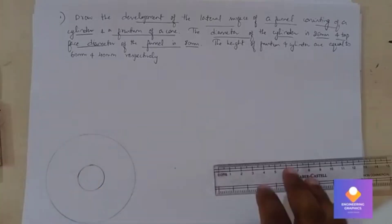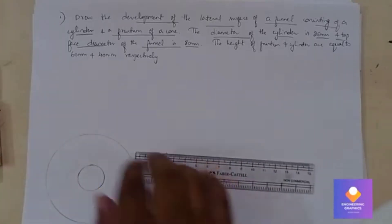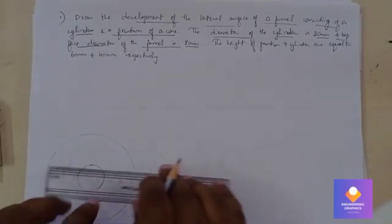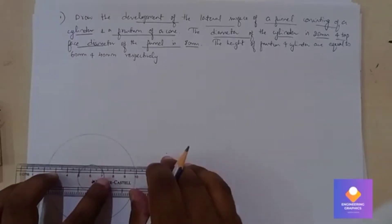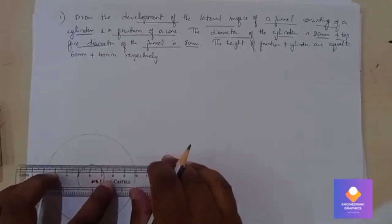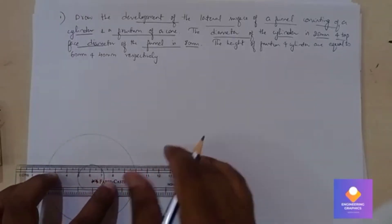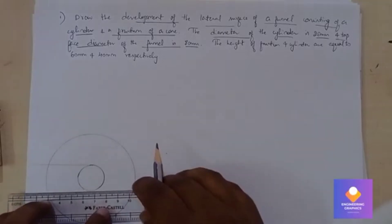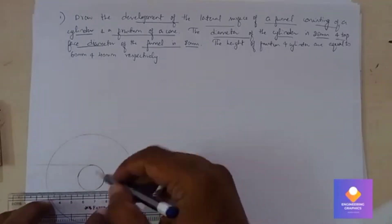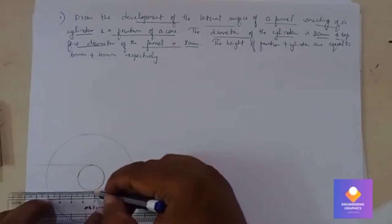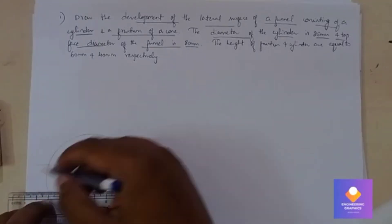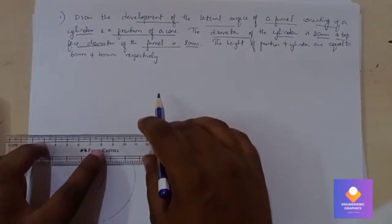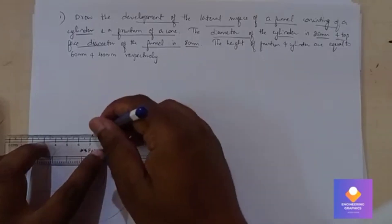Show the dimensions for these two circles: one having a diameter of 20 and another having a diameter of 80.